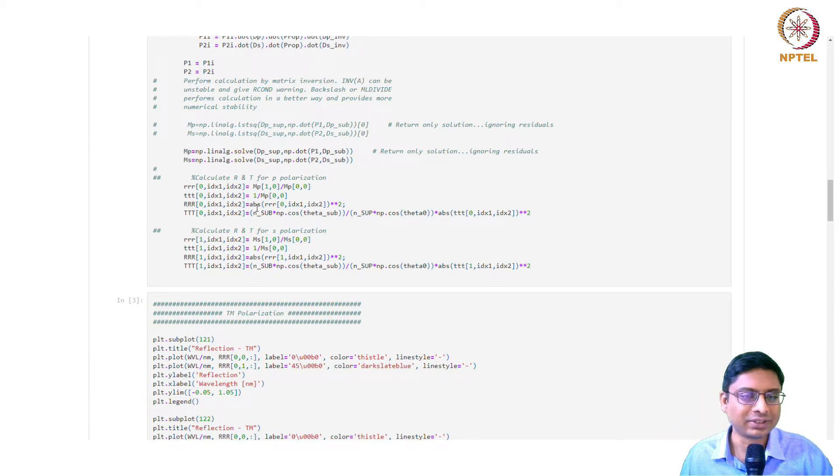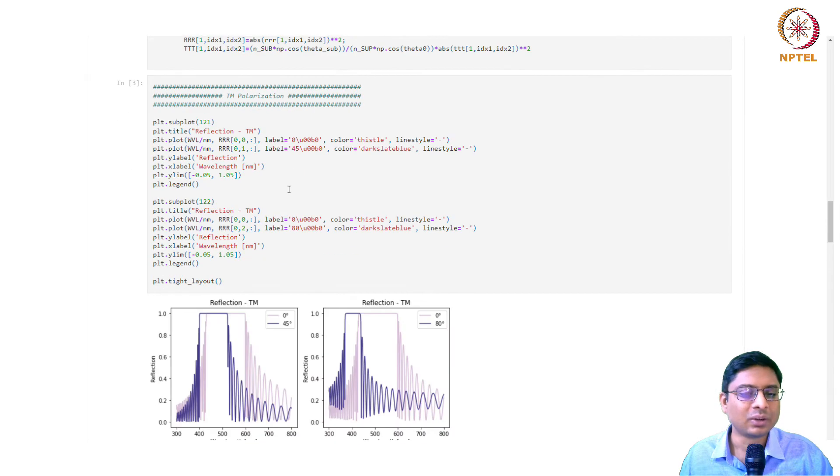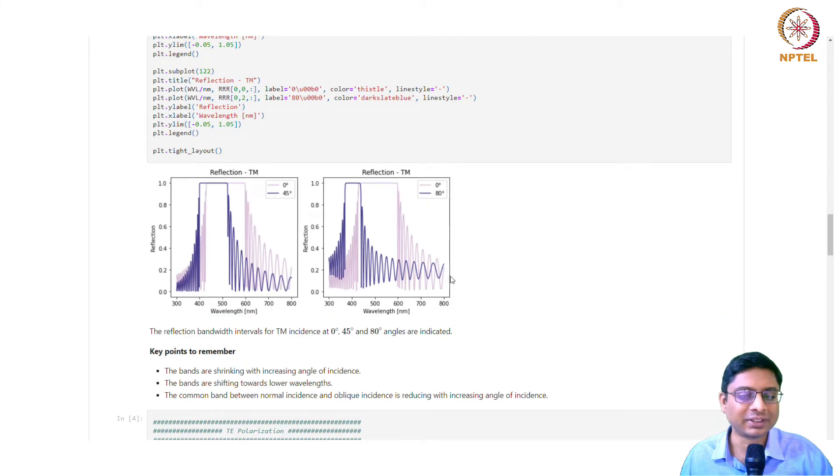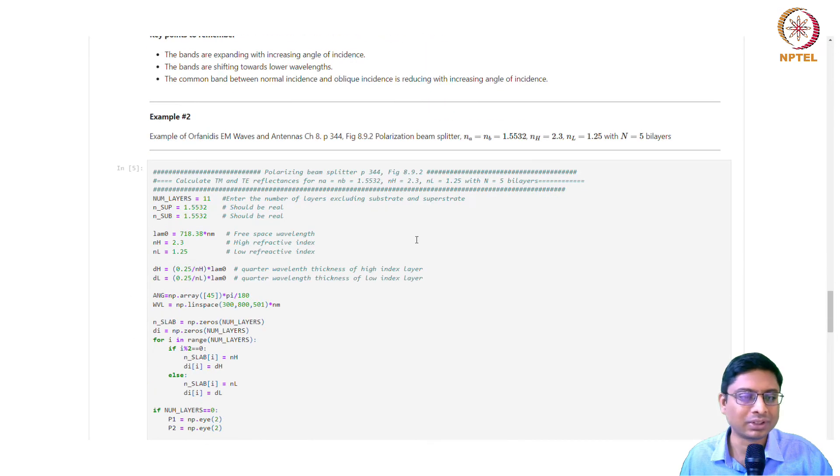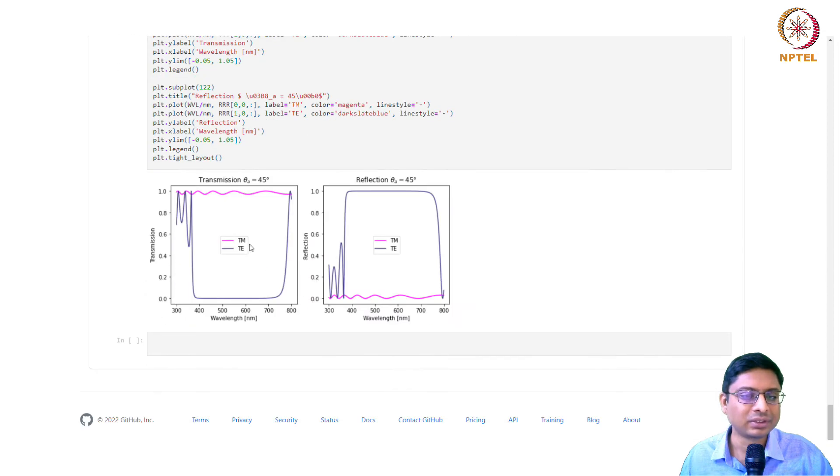Finally, reflectance is m21 by m11. In Python, indices start from zero, so m21 is mp10 divided by mp00, the first element. Transmission was one by m11, so mp00 reflects that. These are field reflection coefficients, and amplitude reflection coefficients are simply the square. Once you do that, you simply plot and get these figures we've shown in the course.